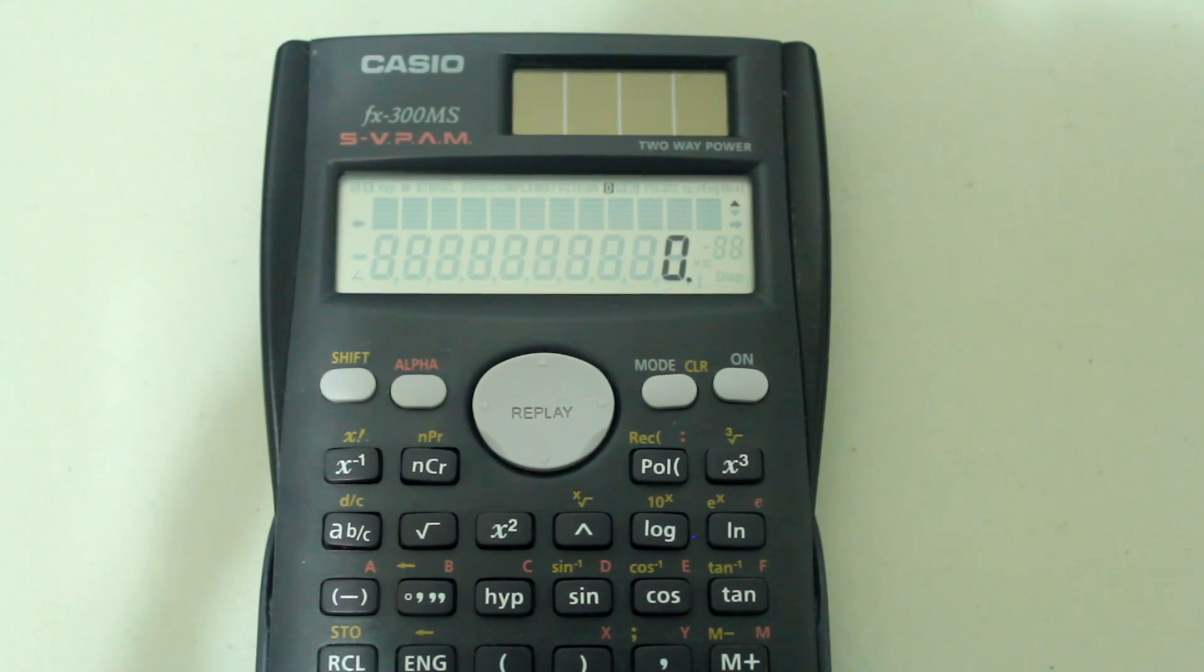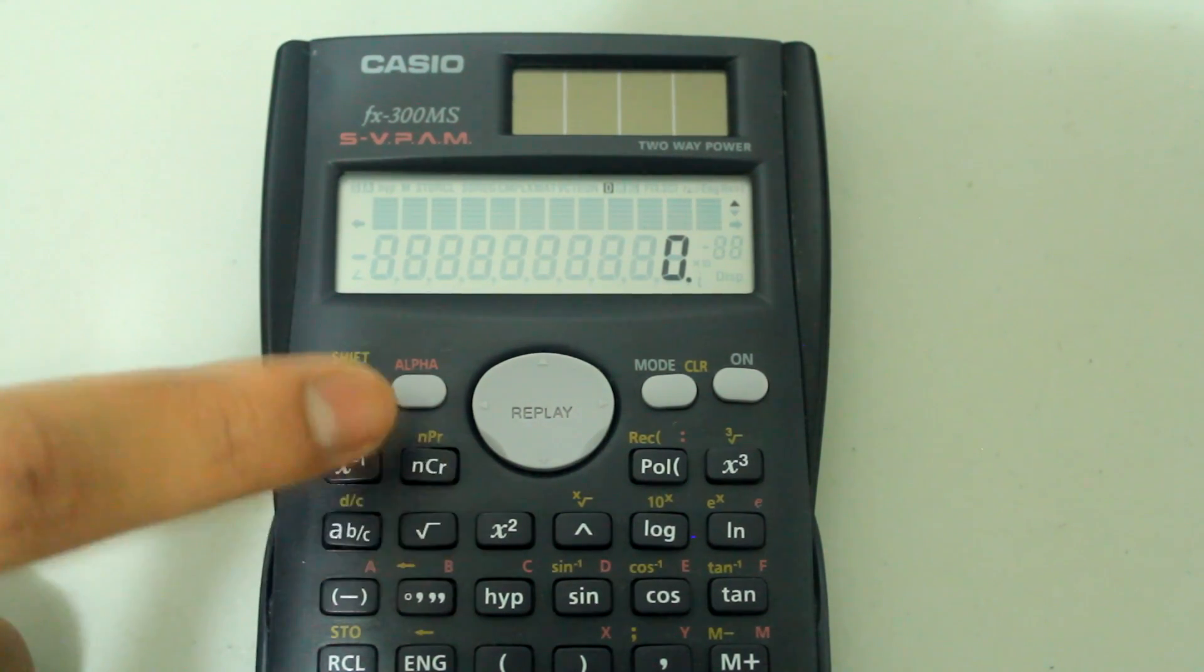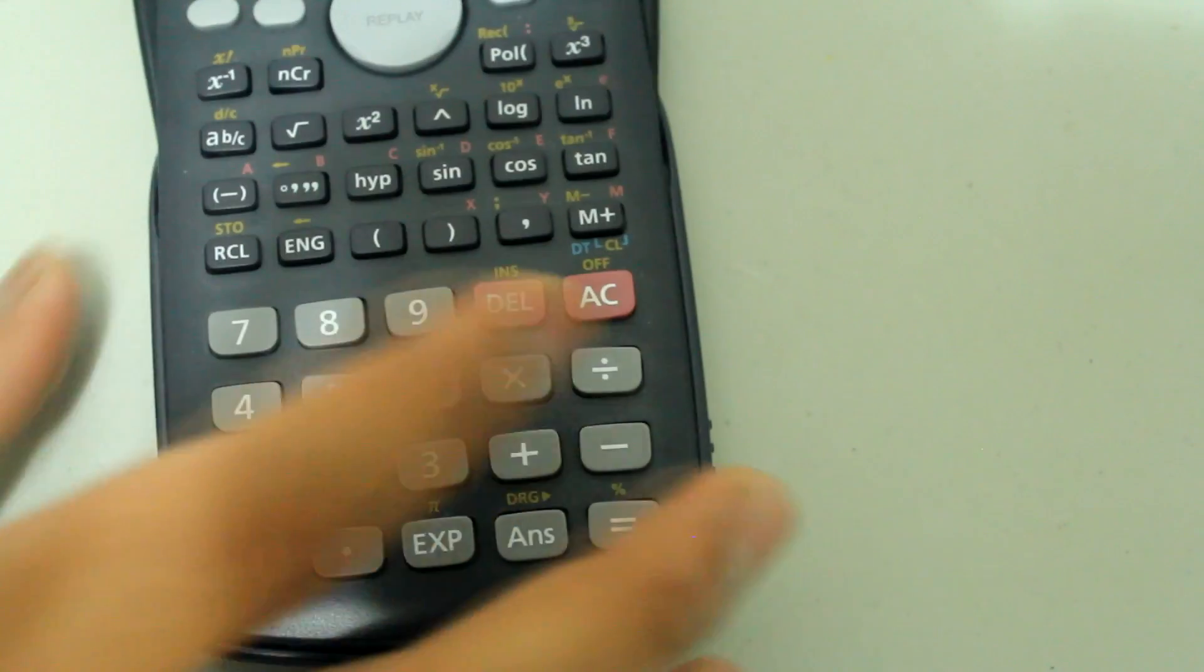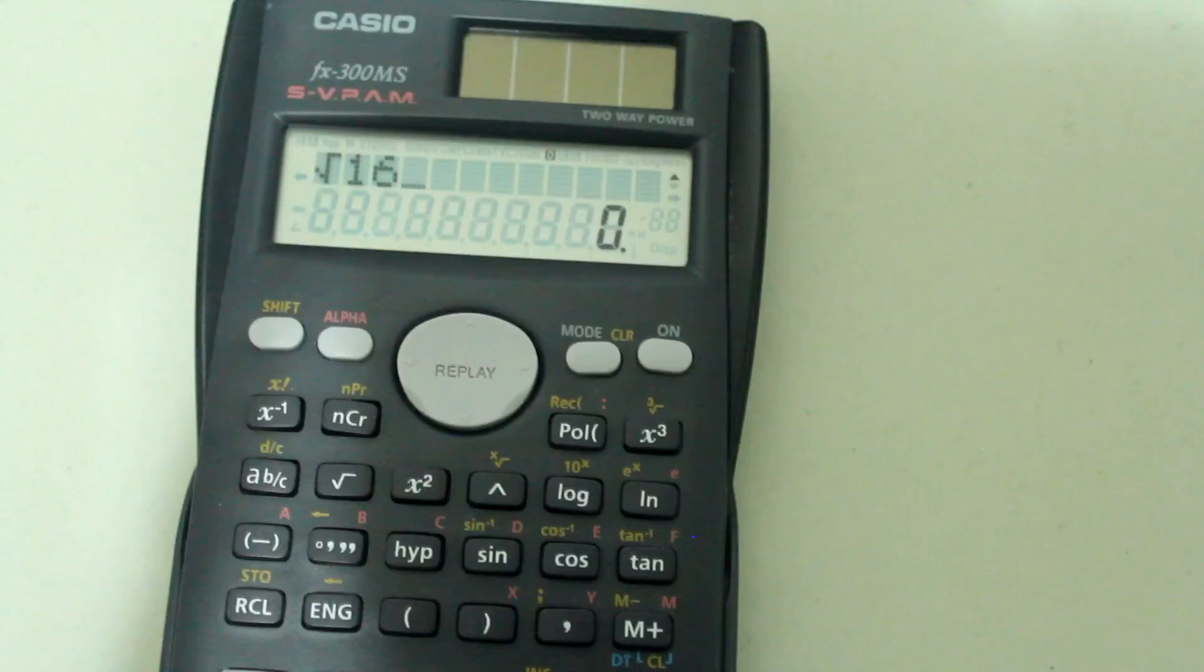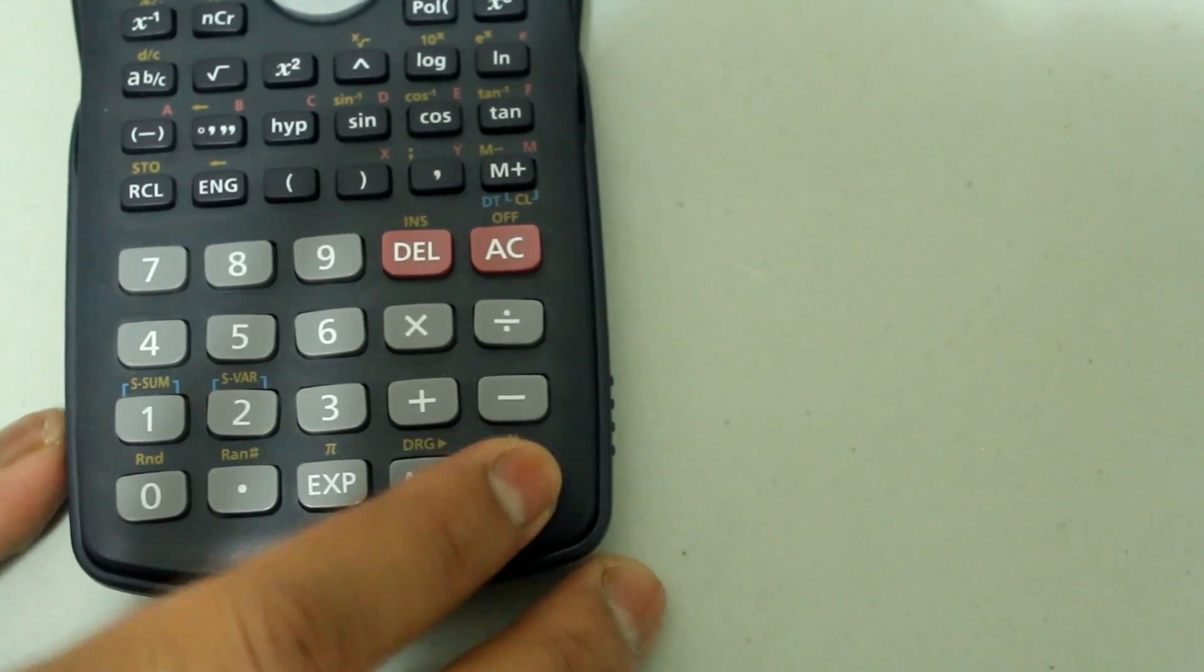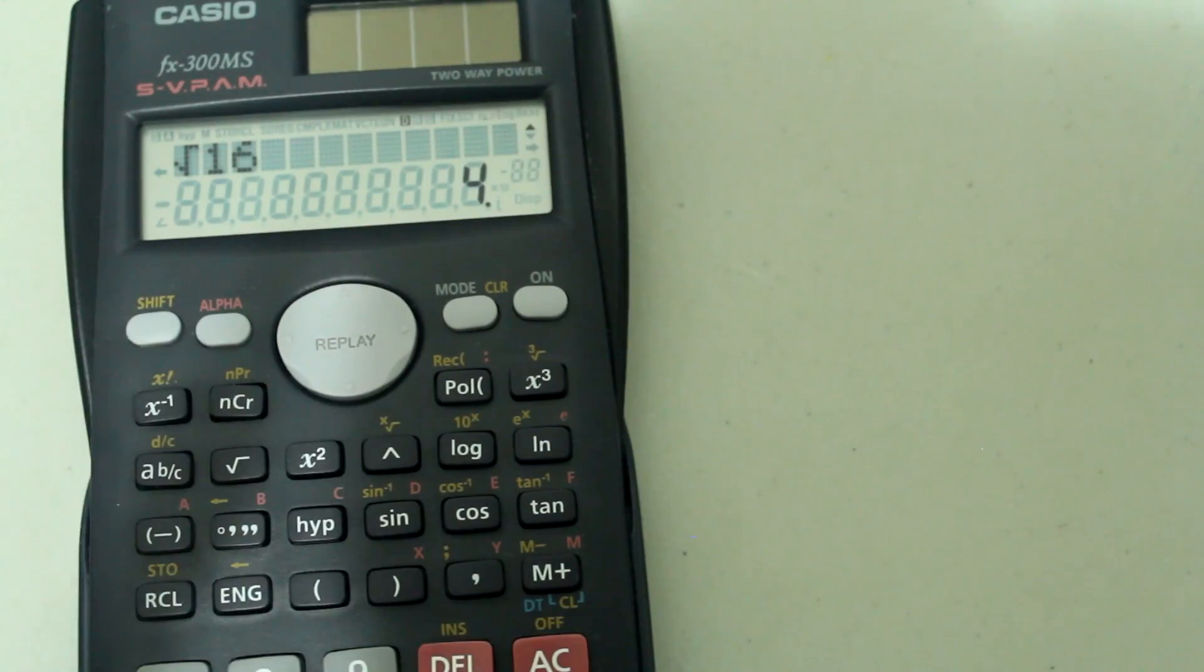First, let's just go over how to find the square root of a number. Let's find the square root of 16. Press the square root button right here and type in 16 on the number pad and the screen looks like this. Just hit enter and now we get the square root of 16 as 4.